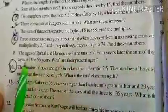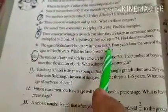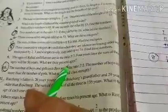The ages of Rahul and Harun are in the ratio 5:7. Four years later, the sum of their ages will be 56 years. What are their present ages?